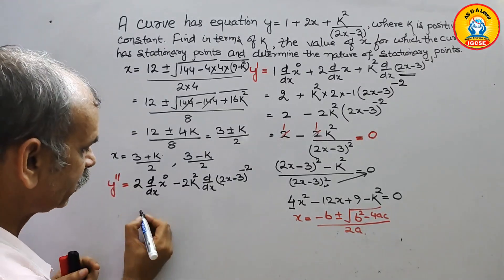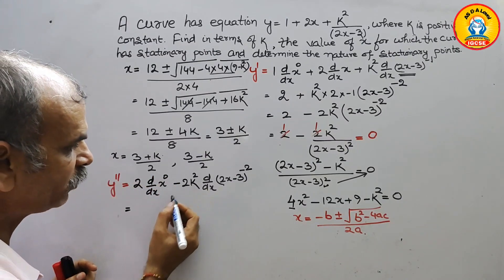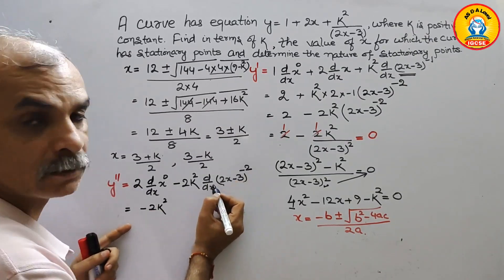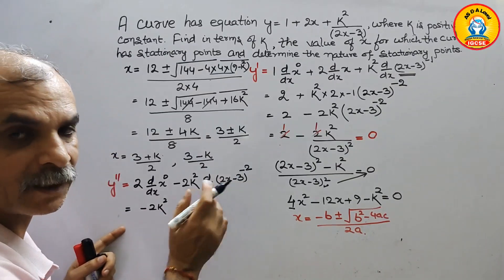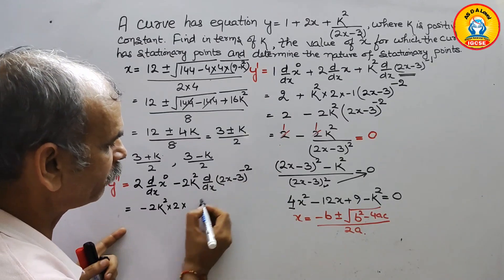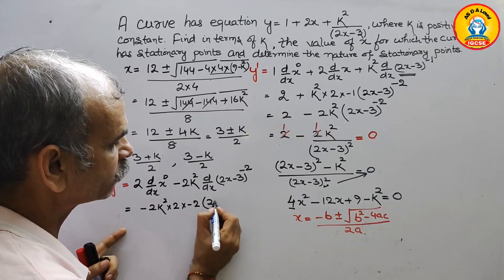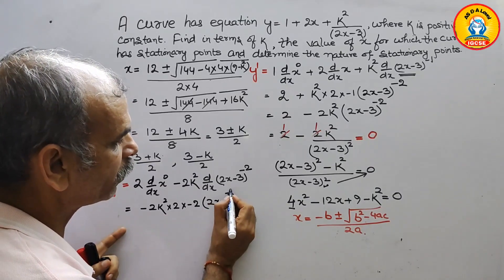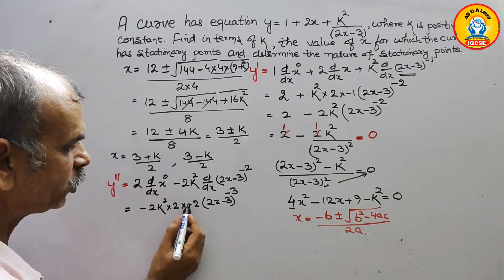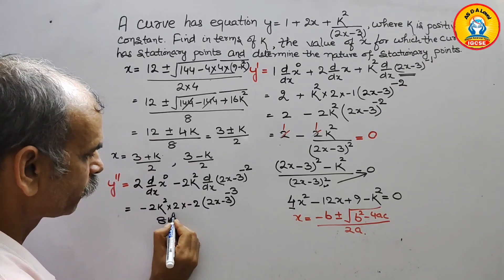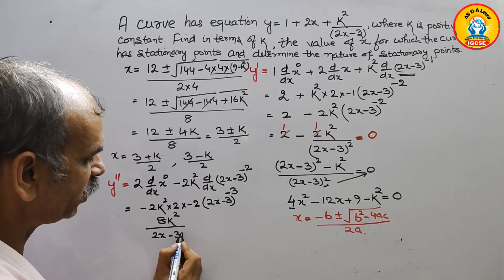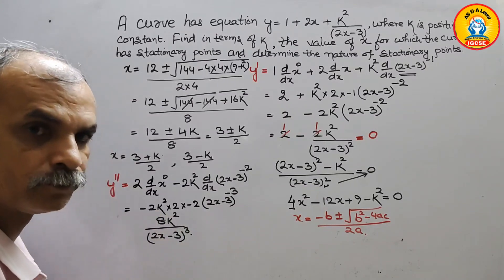Differentiating −2k²(2x − 3)⁻²: bring down the power −2, multiply by the inner derivative 2, and the power becomes −3. So y'' = −2k² · (−2) · 2 · (2x − 3)⁻³. Since minus times minus is plus, this gives y'' = 8k² / (2x − 3)³.